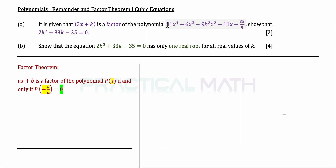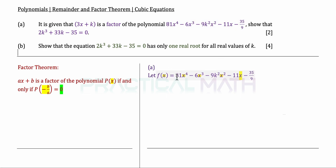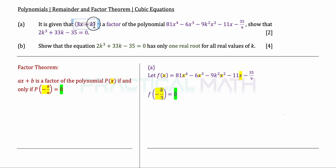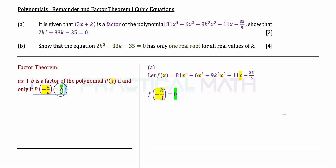Moving on to this question, we are given a polynomial that is not yet defined. To apply the remainder and factor theorem, we have to define all polynomials. So in part a, we first define the polynomial by letting f(x) be it. Since we are told that 3x plus k is a factor, the next step is to set 3x plus k equal to 0, giving x equals negative k over 3. The question says it's a factor, so we set the remainder equal to 0.